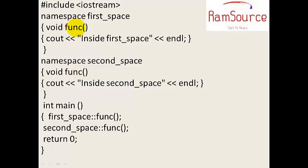Now let's see what the main function looks like. In this case, we will use namespace. Namespace second_space is the second one. Using the scope resolution operator of the function — first namespace, first namespace function executes. Similarly, with scope resolution operator you can invoke the other namespace.